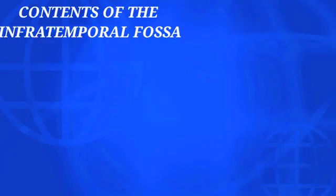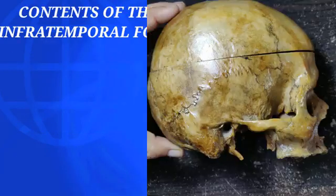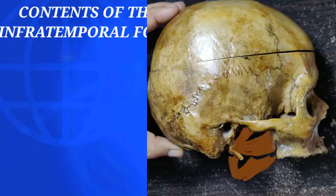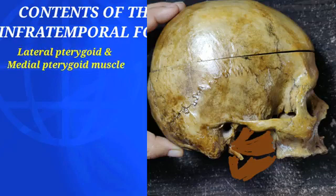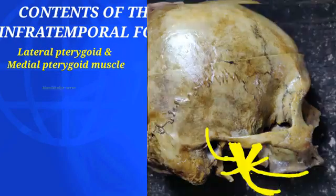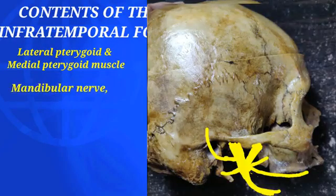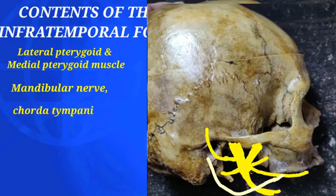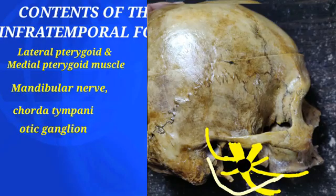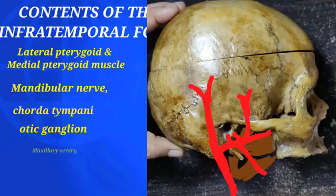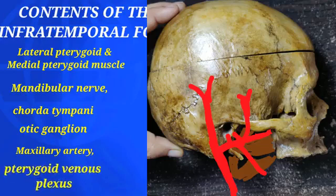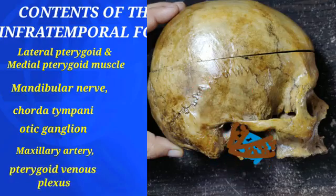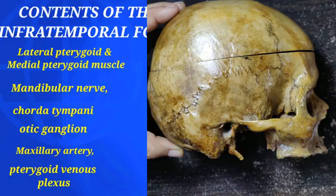The contents of the infratemporal fossa include the lateral and medial pterygoid muscles, the mandibular nerve with its branches, the chorda tympani nerve, the otic ganglion with its connections, the maxillary artery, and the pterygoid venous plexus.